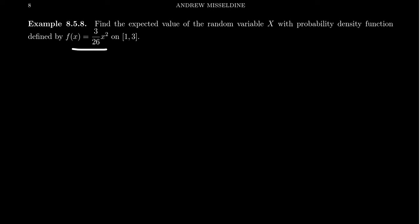We saw this example earlier in our series: f of x equals 3 over 26 x squared. It's a density function whose domain is 1 to 3. The expected value here we can find from the calculation.